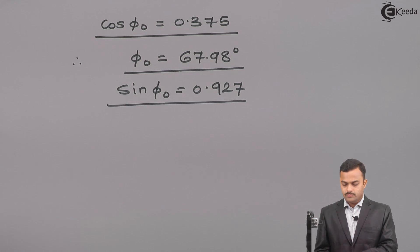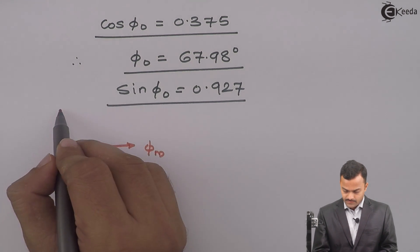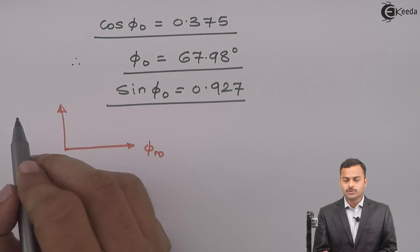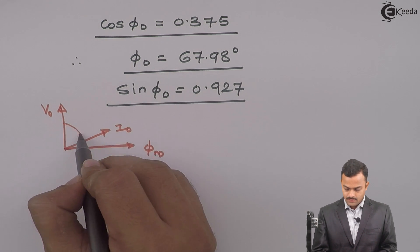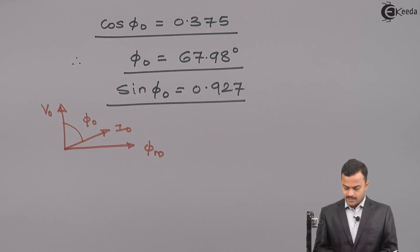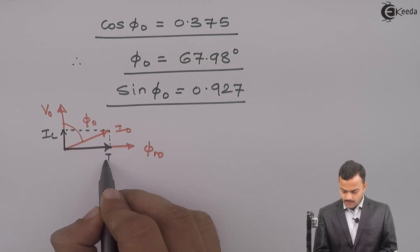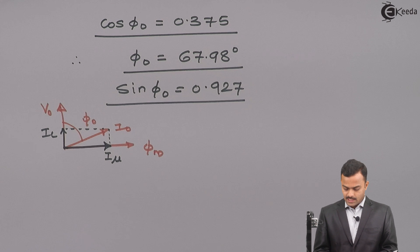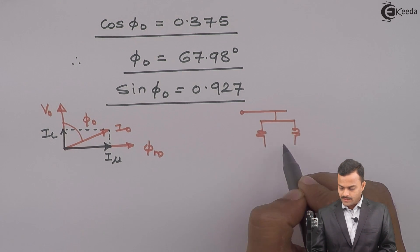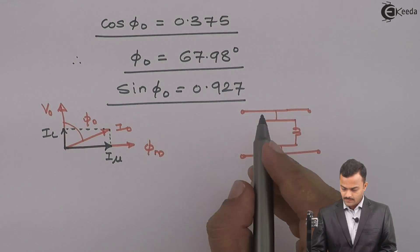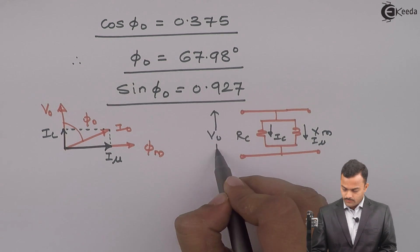We calculated this because if we draw a simple phasor diagram where φ_M is the flux, the EMF induced equals the open circuit voltage. The no-load primary current I₀ has φ₀ as the angle between V₀ and I₀. The components of I₀ are I_C and I_μ. We calculate I_C and I_μ because the equivalent circuit has two parameters R_C and X_M, through which currents I_C and I_μ flow respectively when voltage V₀ is applied.